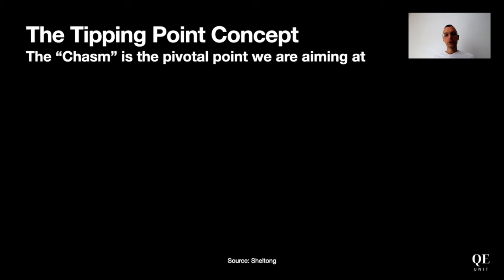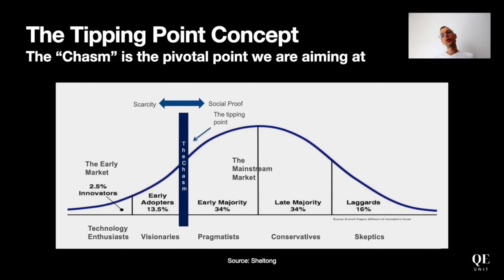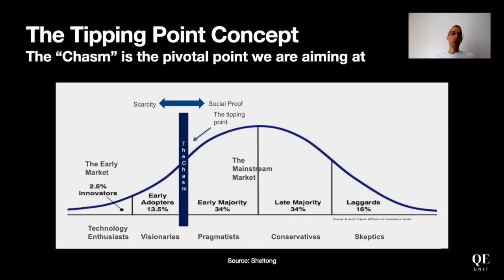From our quality engineering perspective, the chasm is the pivotal point we are aiming at. The tipping point divides the ecosystem into two parts: on the left we have the early market, and once the chasm is crossed, we reach the mainstream market. We start on the left with innovators and early adopters, then move to the early majority and the remaining flight maturity and laggards, who adopt once the overall system has adopted it.